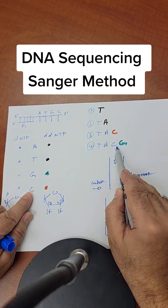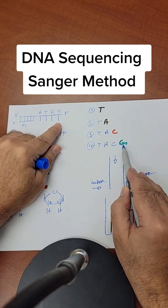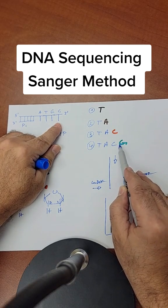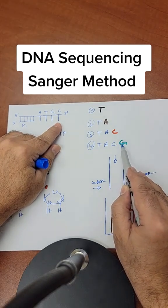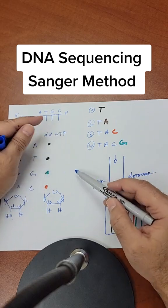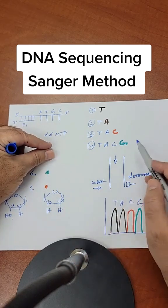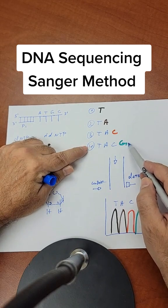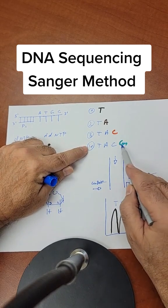If we put the regular C, the reaction will proceed until we reach the end, which in this case is G. So we have two possible solutions here. Either the tagged G gets incorporated, or the regular G, and the reaction will complete, but at least we'll have some products that are tagged with G.